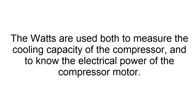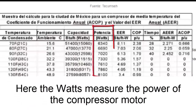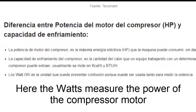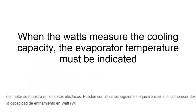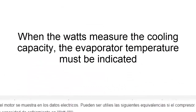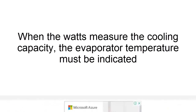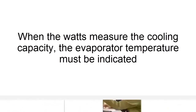We must emphasize that the watt is the unit that can present confusion, because it can be used both to measure the electrical power of the compressor motor and to measure its cooling capacity. You must take into account that the cooling capacity is always taken as a function of an evaporator temperature, which is why it is a more precise parameter than horsepower alone.